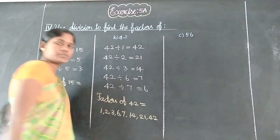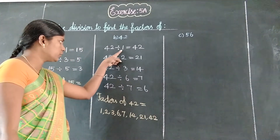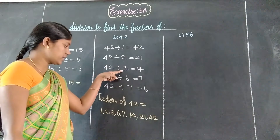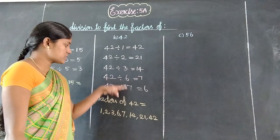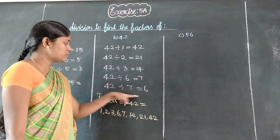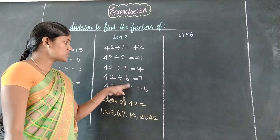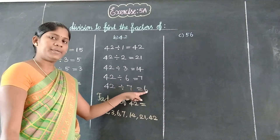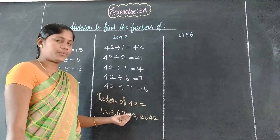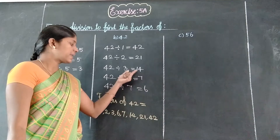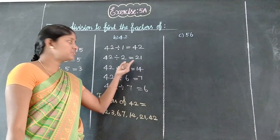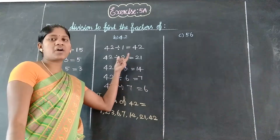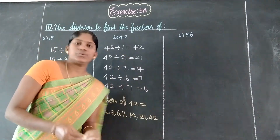Okay: 1, 2, 3, 6, 7 — 6 and 7 are already counted double time, so put them once. Next: 14, 21, 42.